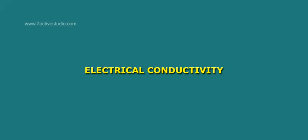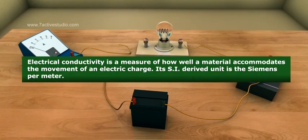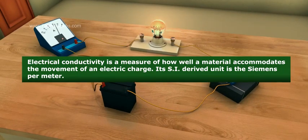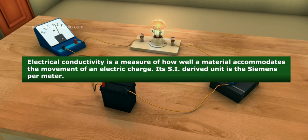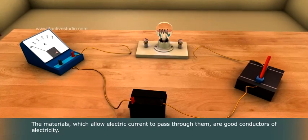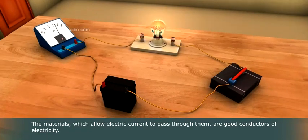Electrical conductivity is a measure of how well a material accommodates the movement of an electric charge. Its SI-derived unit is the Siemens per meter. The materials which allow electric current to pass through them are good conductors of electricity.